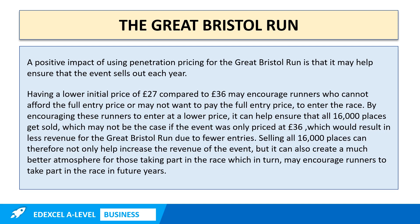A positive impact of using penetration pricing for the Great Bristol Run is that it may help ensure that the event sells out each year. Having a lower initial price of £27 compared to £36 may encourage runners who cannot afford or may not want to pay the full entry price to enter the race. By encouraging these runners to enter at a lower price, it can help ensure that all 16,000 places get sold, which may not be the case if the event was only priced at £36, resulting in less revenue due to fewer entries. Selling all 16,000 places can therefore not only help increase revenue, but can also create a much better atmosphere for those taking part, which in turn may encourage runners to take part in future years.